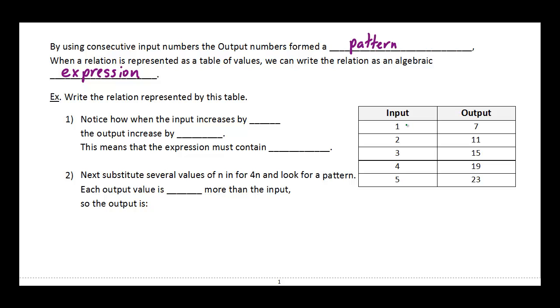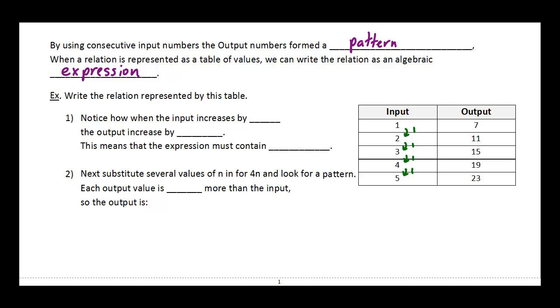Take a look at your input value there. You see our input values are increasing by 1 every time: 1, 2, 3, 4, 5. So our input value is increasing by 1. Take a look at what's happening to our output value. There's an increase of 4, another increase of 4, another increase of 4, and so on. So we start to see a bit of a pattern emerge. Notice how when the input increases by 1, the output increases by 4.